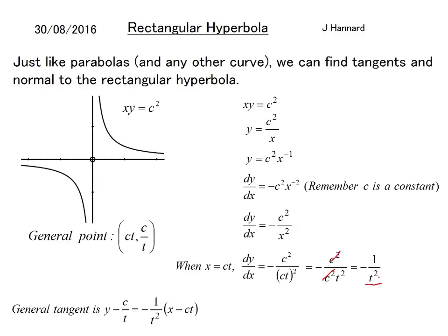y minus b equals mx minus a. Here I'm going to times throughout by t squared just to get rid of the fractions and you get that. Very careful with this negative sign here. Do not forget about them and just change everybody's sign in the brackets and you get that. Making everybody positive the generic tangent to a hyperbola is t squared y plus x equals 2ct.